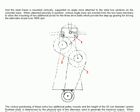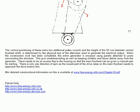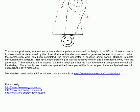The vertical positioning of these extra two additional pulley mounts and the height of the 50 mm diameter central flywheel shaft is determined by the physical size of the alternator used to generate the electrical output. When the construction work has been completed, the entire generator is encased using panels attached to posts surrounding the structure. This gives weatherproofing as well as keeping children and blown debris away from the generator.